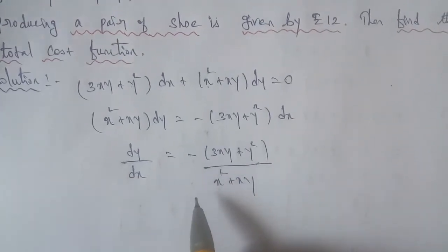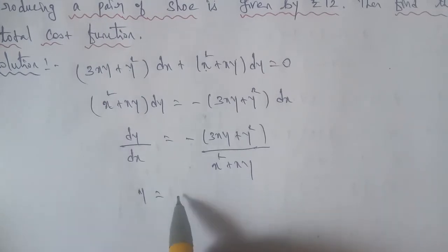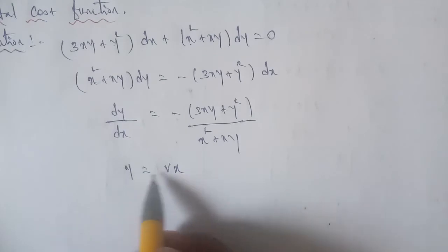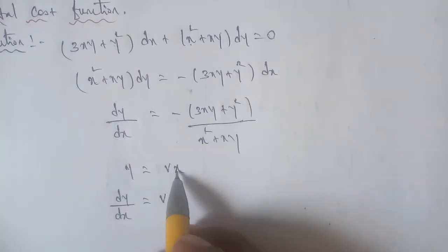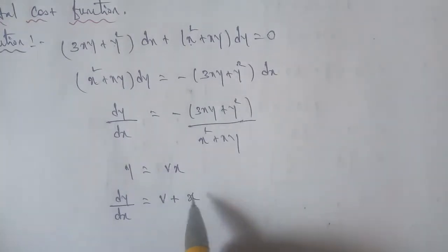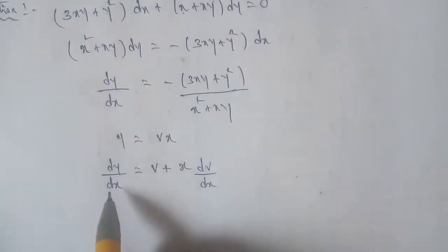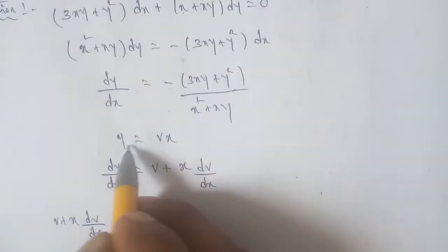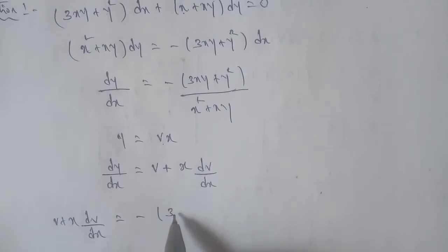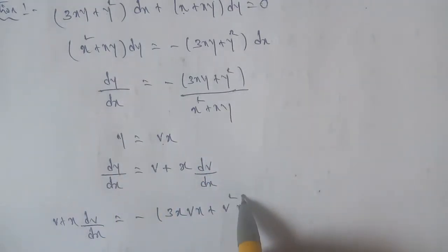Since it is a homogeneous differential equation, apply the substitution y = vx. Differentiating with respect to x: dy/dx = v + x·dv/dx (by the UV product rule). Now substitute into the equation: v + x·dv/dx = −(3x·vx + (vx)²) / (x² + x·vx).